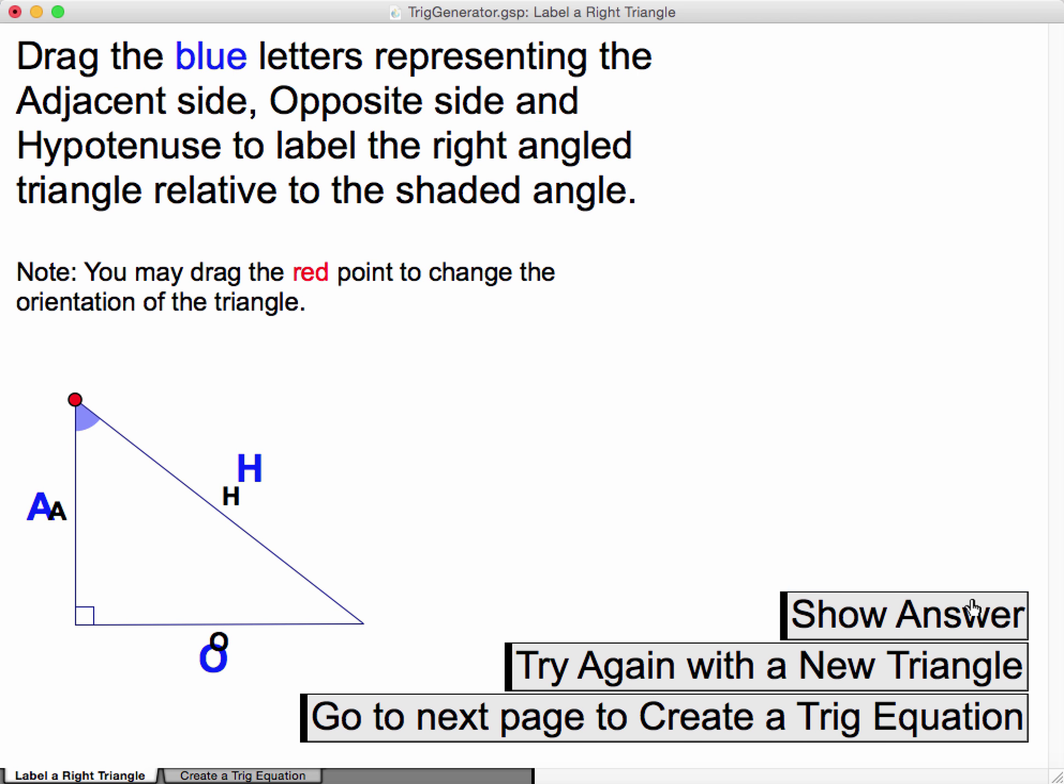And then when you hit show your answer, it should be able to check if you're right, and then if you click try again with a new triangle, it randomly generates another triangle and another angle, and you have to place those.